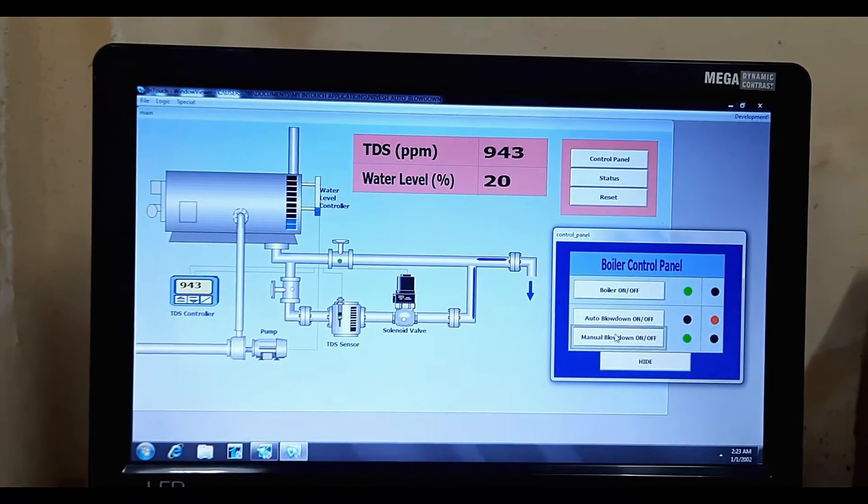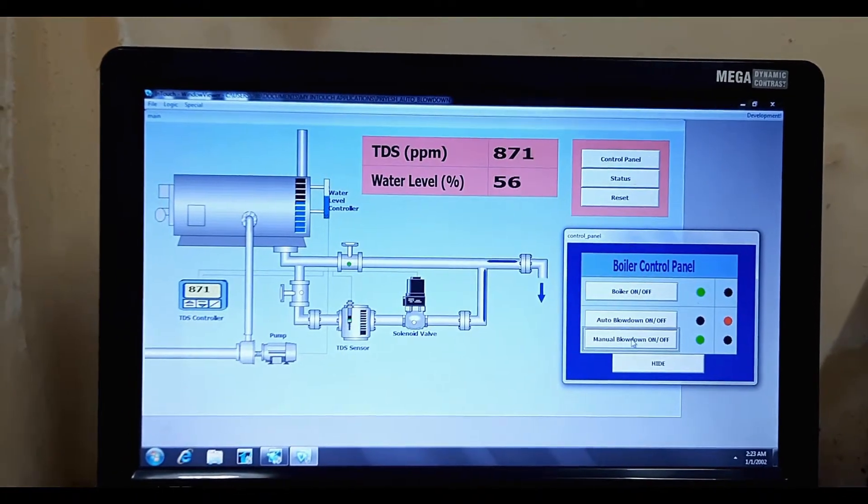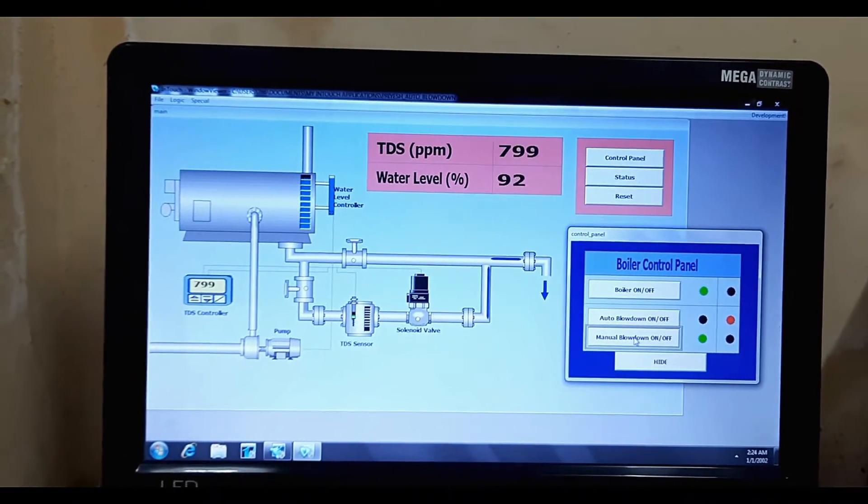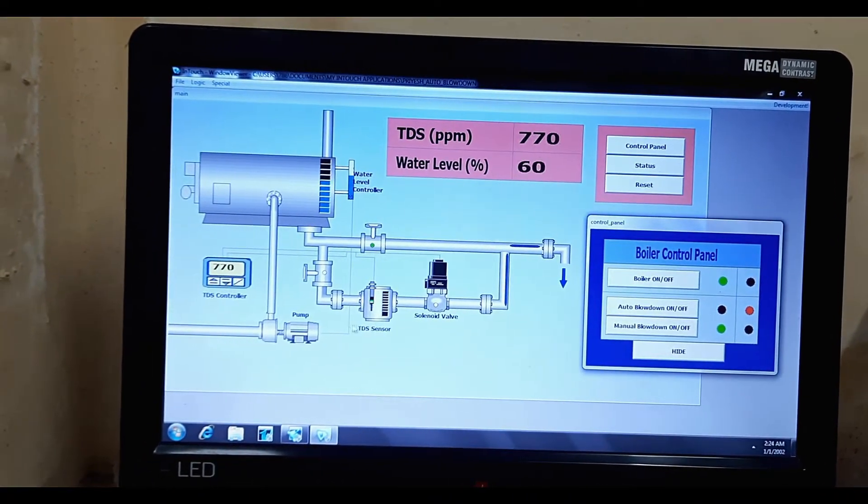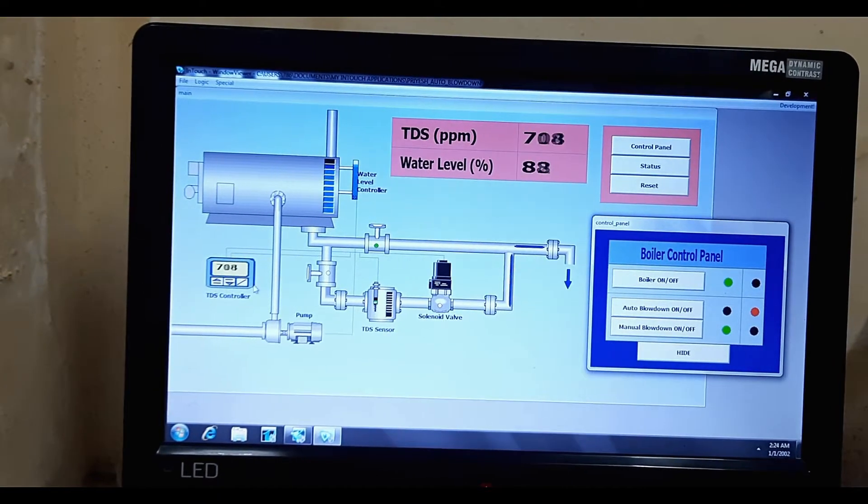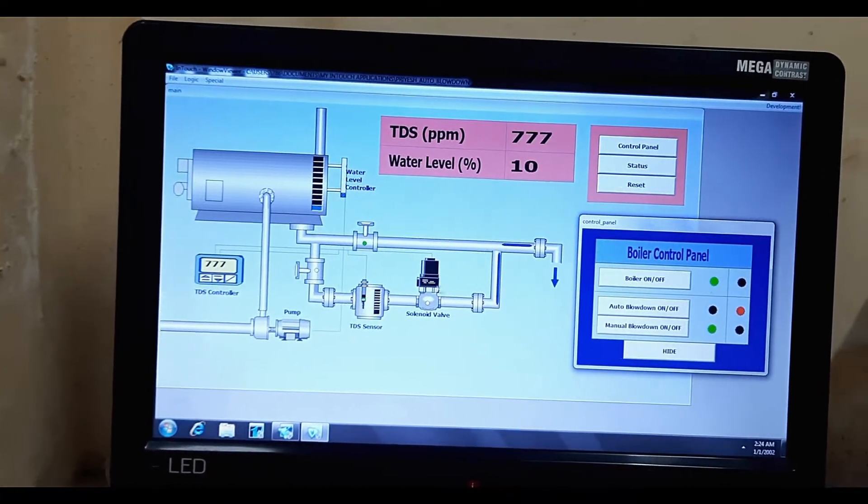Now let's say I don't want this manual operation, I want something automatic. So this is the basic system that you will require: you will need a sensor, a controller, and a valve for that.